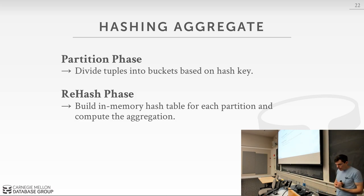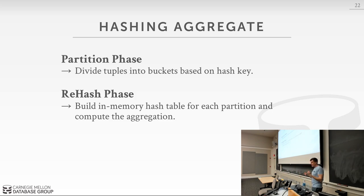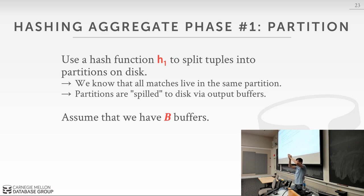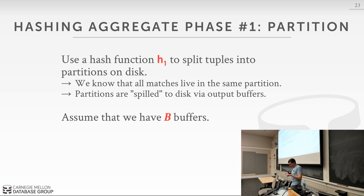The hashing aggregate has two phases. In the first phase, we partition the tuples into buckets and write those to disk. In the second phase, we bring each bucket back into memory, build an in-memory hash table for just that partition, and compute the aggregate. In phase one, we use one hash function — it doesn't matter which — and scan over our input tuples. Whatever key we want in our GROUP BY, we hash it and that tells us which partition to write into on disk. We're not building a hash table yet, just writing into output buffers.